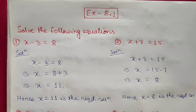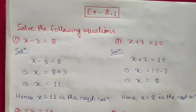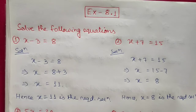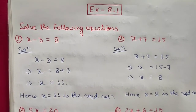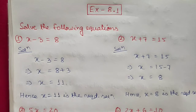An expression is formed when we add, divide, or multiply variables with any constant term. A linear equation is one where the variable has power 1. An equation with power 2 is a quadratic equation, and power 3 is a cubic equation. In the previous video, we solved examples using the transposing method — one type had variables on only one side, and another had variables on both sides.